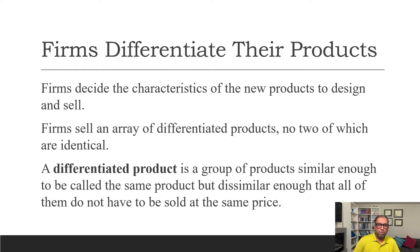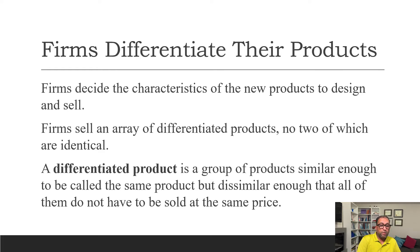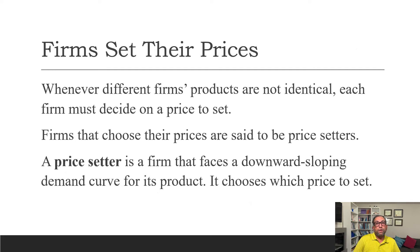Toothpaste is another example — different brands with different names and characteristics charge different prices. They are similar enough to all be called toothpaste, but dissimilar enough that consumers are willing to pay different prices. When products are not identical, each firm must set its own price. Starbucks, for example, has a monopoly over selling its own coffee, which gives it market power to determine its price. Firms that choose their own prices are called price setters.